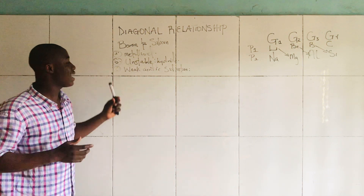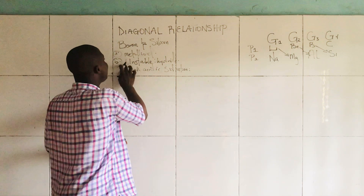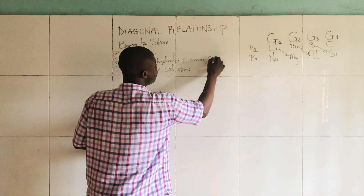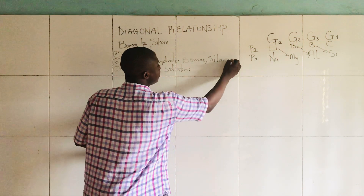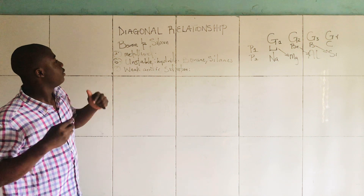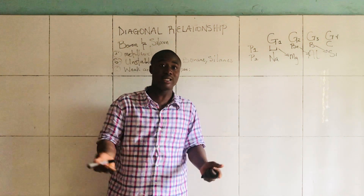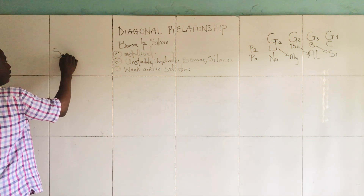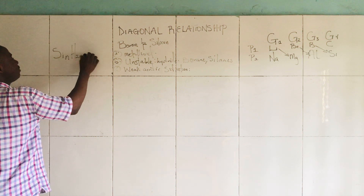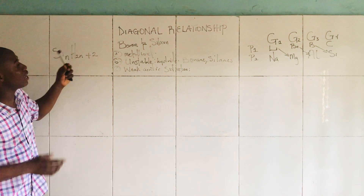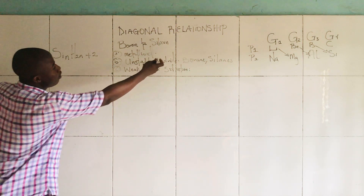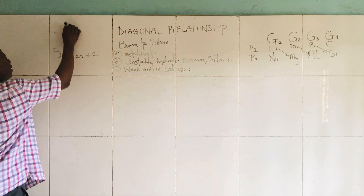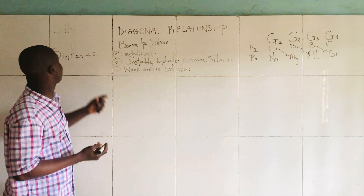They form weak acidic solutions. Now, the hydrides of Boron and Silicon — the general formula is SiₙH₂ₙ₊₂. An example of a hydride of silicon is SiH₄, which is one hydride of silicon.